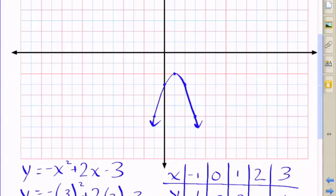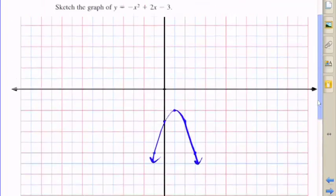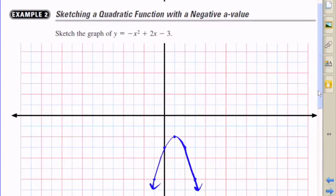And there is the sketched graph of the function y equals negative x squared plus 2x minus 3. It's a beautiful thing, isn't it?